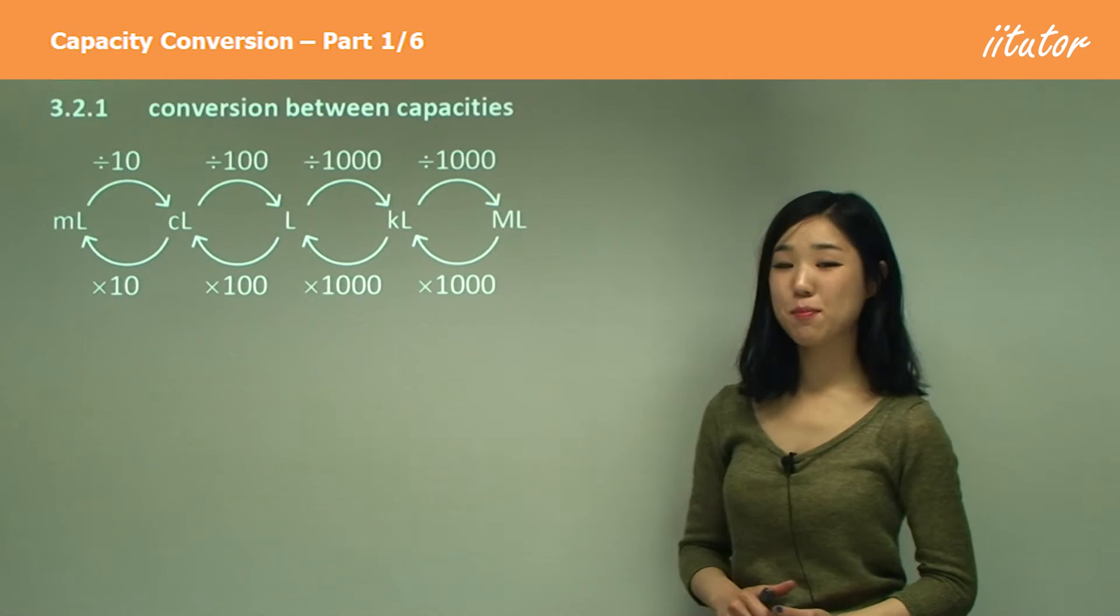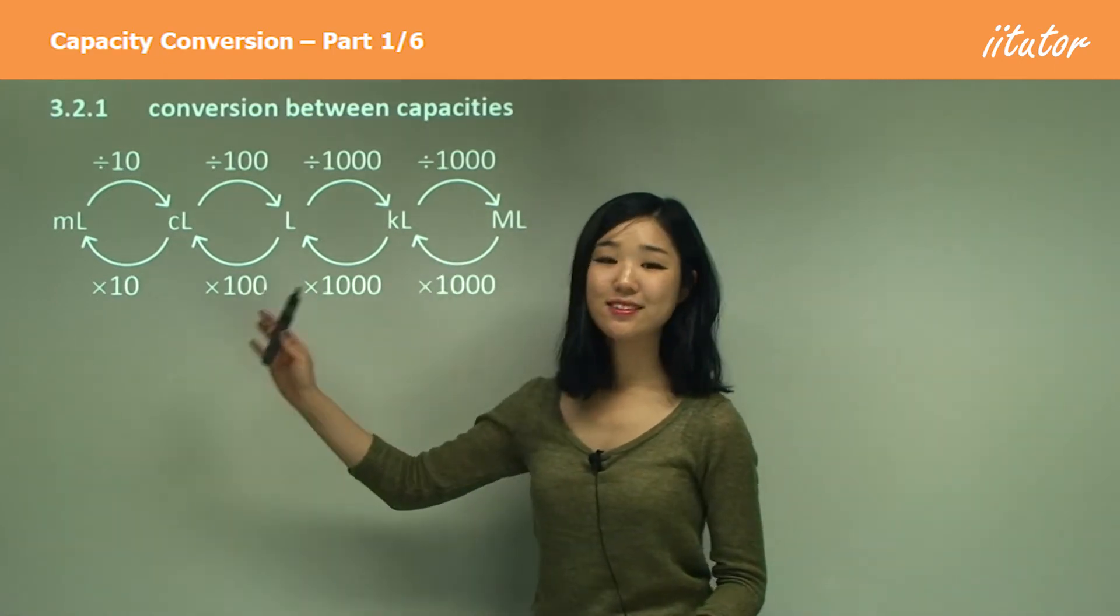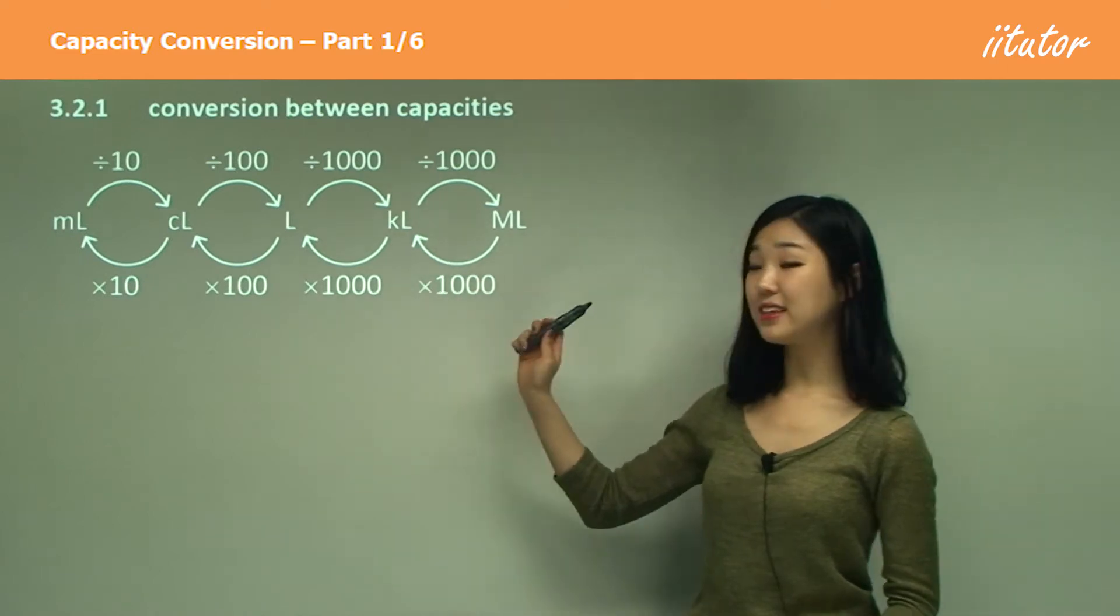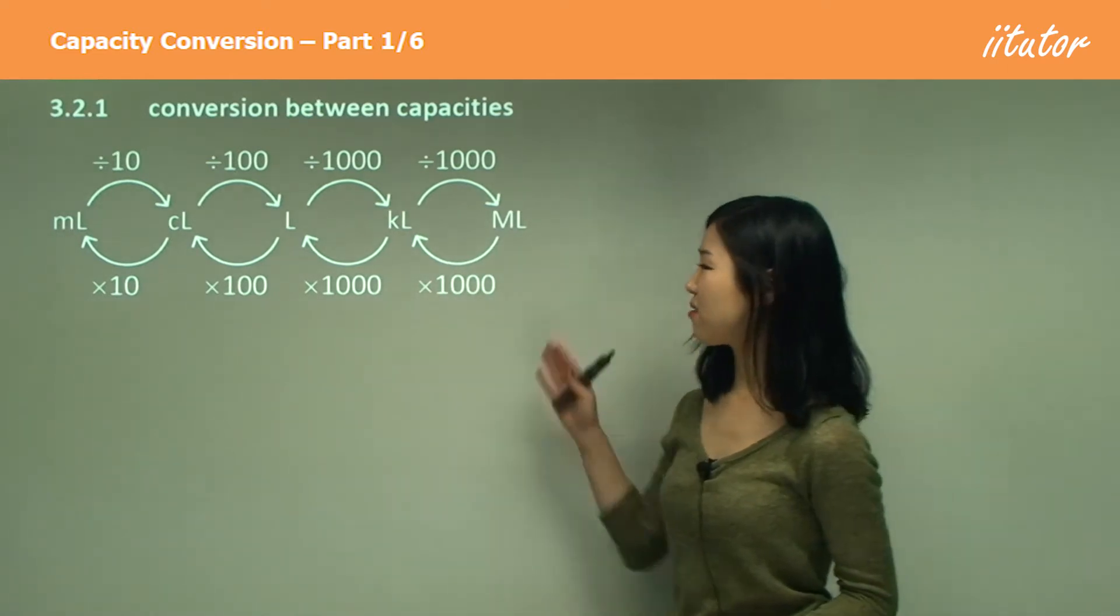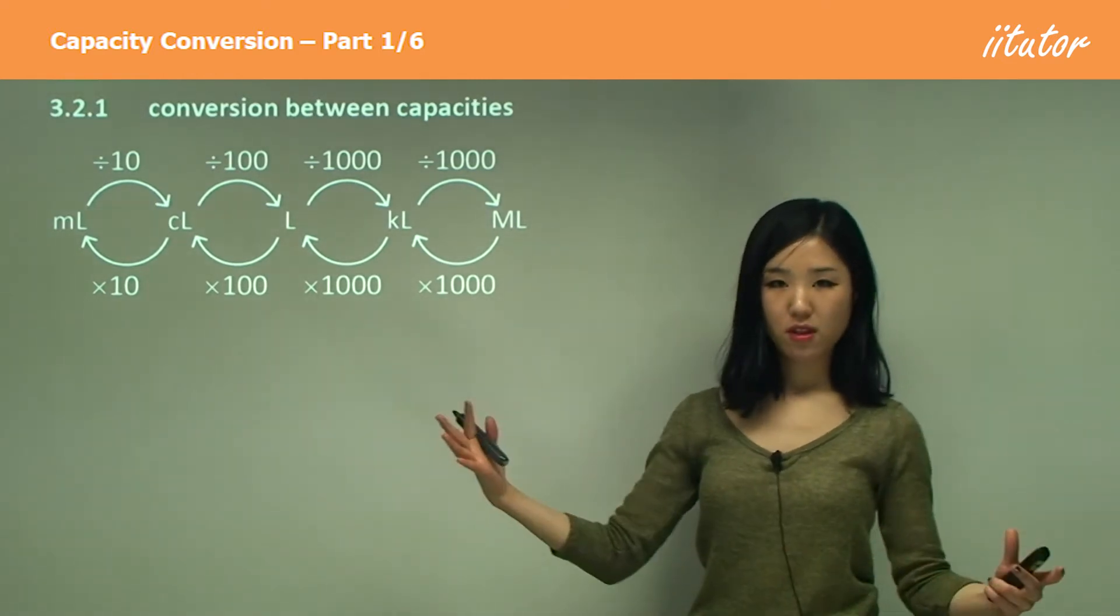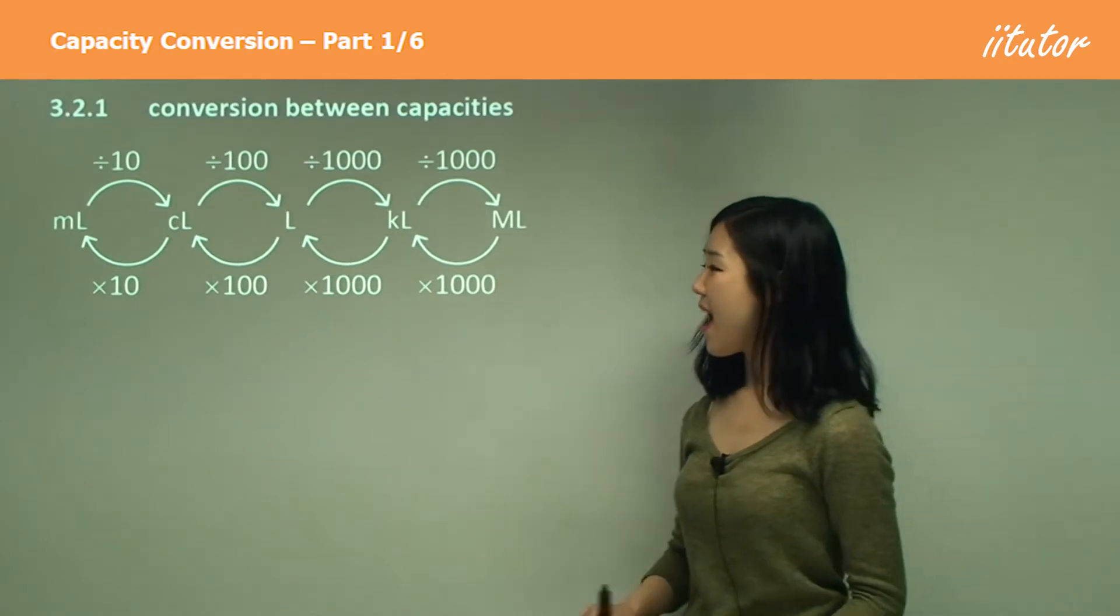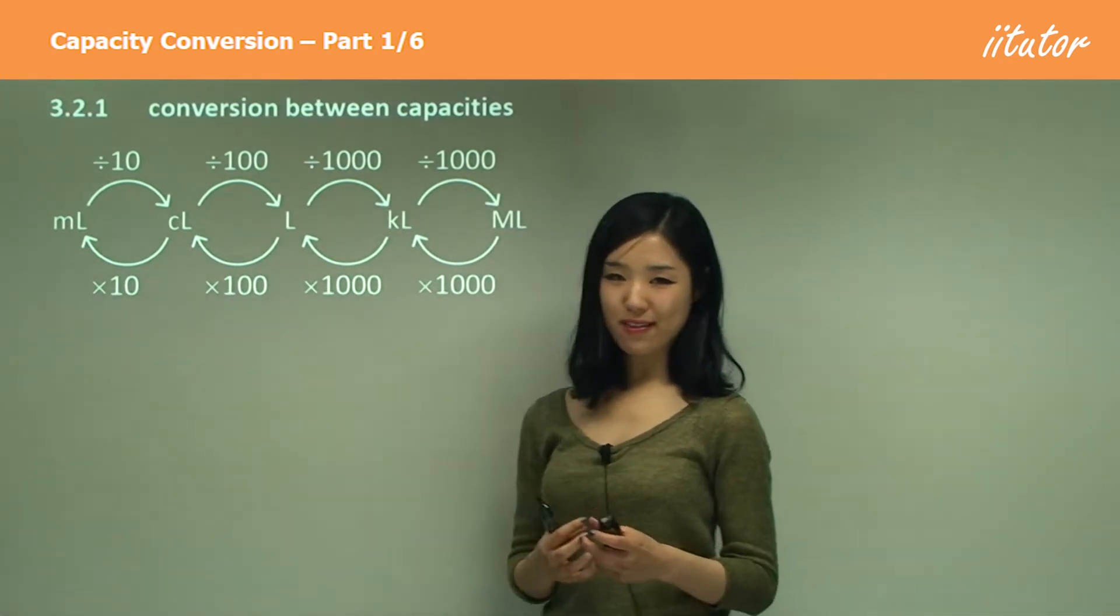Starting with conversion between capacities. When I mean capacities, I'm talking about milliliters, centiliters, liters, kiloliters, and megaliters. You might not have heard of some of them like megaliters, but this is what we use when we talk about really large capacities and milliliters when we have really small amounts of capacity.